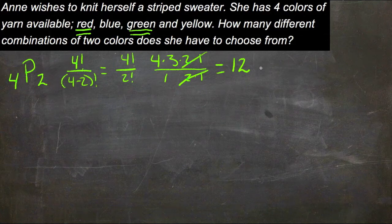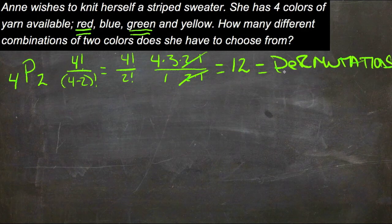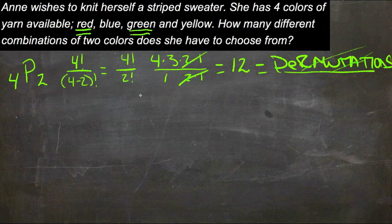But in this situation, that would be the number of permutations. We don't want permutations, we want combinations. So what we want to do is figure out how many different possibilities there are, and then take away any that are duplicates.